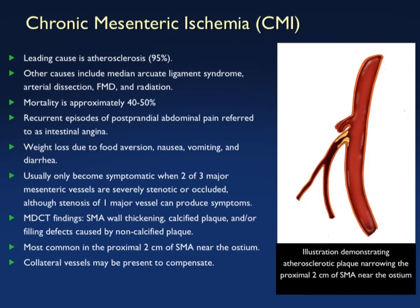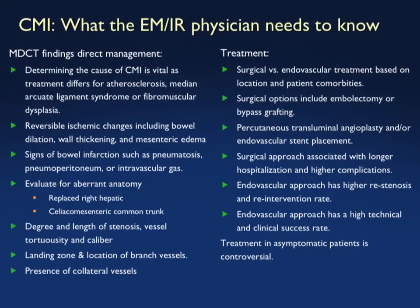What you want to look for is wall thickening, decreased lumen, and extensive plaque. Chronic mesenteric ischemia involving the SMA most commonly affects the proximal vessel — atherosclerotic changes of the celiac, SMA, or IMA typically involve the proximal vessel. CT is very good at being specific and suggesting chronic ischemia. We always look beyond the vessels for bowel wall thickening and pneumatosis, and we assess the length of stenosis. All this information helps determine surgical versus endovascular treatment.